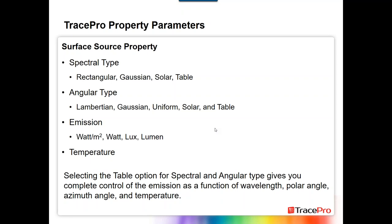The surface source property turns any surface in the model into a light-emitting surface. Parameters include spectral type (rectangular, Gaussian, solar, or table), angular type (Lambertian, Gaussian, uniform, solar, or table), and emission (in watts per meter squared, watts, lux, or lumens). This can also vary as a function of temperature. Selecting the table option for both spectral and angular distribution types gives complete control of emission as a function of wavelength, polar angle, azimuth angle, and temperature — providing the most generality.